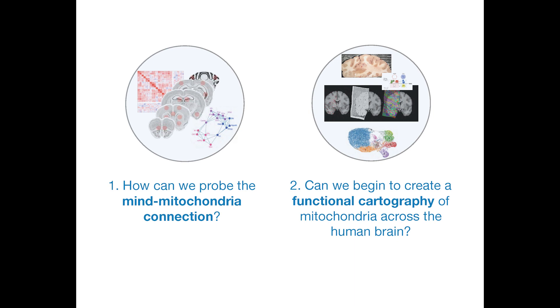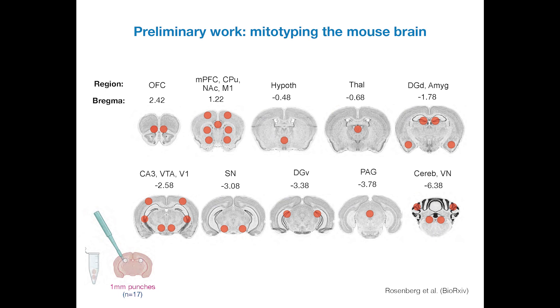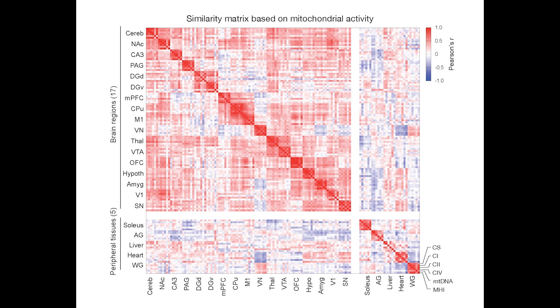I'll show you two pieces applying those principles to understand the brain and the mind. We developed an approach where we can measure different components of the mitochondrial electron transport chain — where electrons are transported and the chemistry turns into electricity inside the mitochondria. We can measure these different components and have optimized the throughput of those assays so you can do this in very small pieces of brains or a few white blood cells. Then you can integrate this into very simple formulas. We call this a mitochondrial health index.